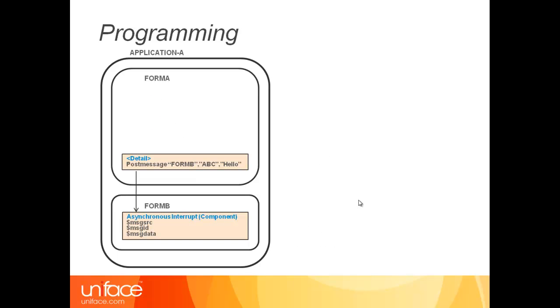To program this, let's look at a simple application called Application A. It has two form instances executing: form A and an instance named form B. A command button on form A has a PostMessage statement in its detail trigger with three parameters: the instance target, the message ID, and the actual message. Form B's asynchronous interrupt trigger would then be fired, and the proc functions mentioned earlier would be capable of processing the message.